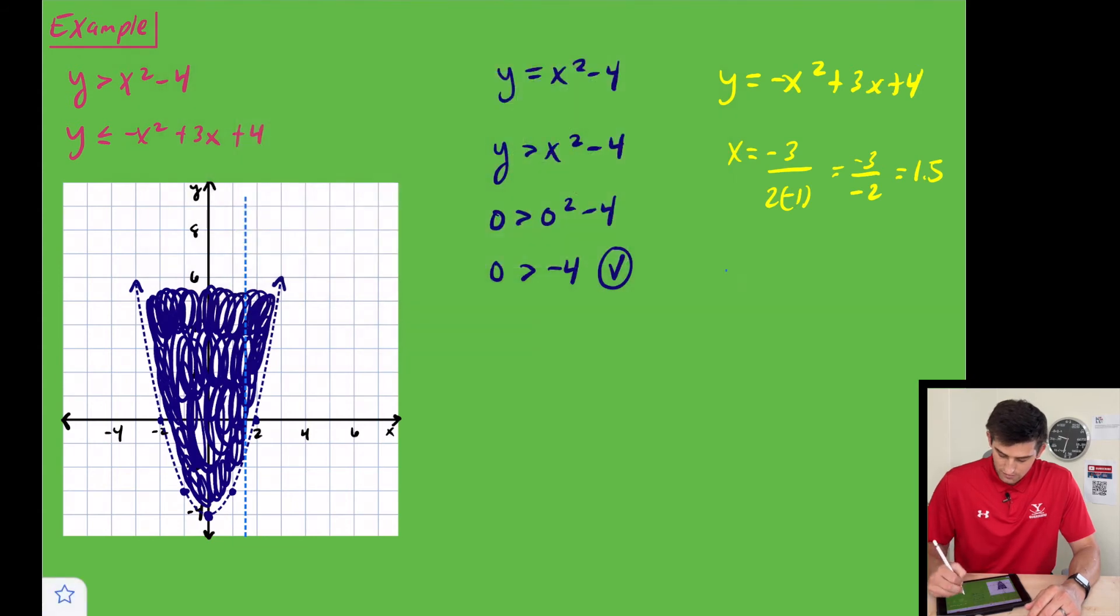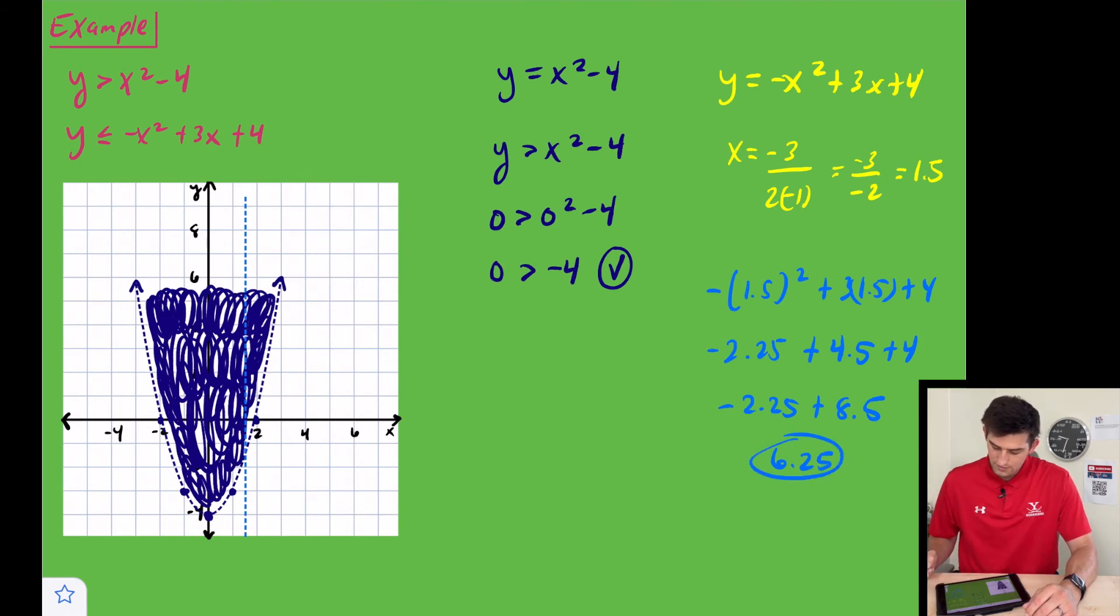Now let's find where our vertex would be located. By plugging in 1.5, we have negative 1.5 squared plus 3 times 1.5 plus 4. So 1.5 squared would be negative 2.25, plus this would be 4.5, plus 4. This would be negative 2.25 plus 8.5, and that's going to give us 6.25.